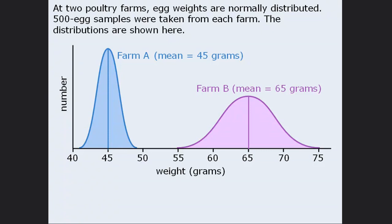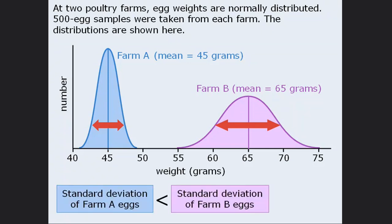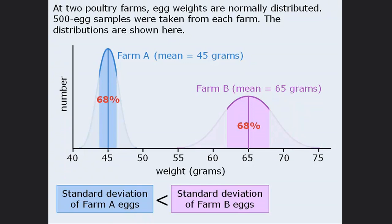We can also make conclusions about the relative standard deviations. At farm A, the data is closely packed around the mean, whereas at farm B the data is much more spread apart. So farm B's standard deviation is greater than farm A's standard deviation. Since both distributions are normal, at both farms about 68% of the eggs will be within one standard deviation of the mean, about 95% within two standard deviations, and about 99% within three standard deviations. The only differences are the actual means and standard deviations at the two farms.